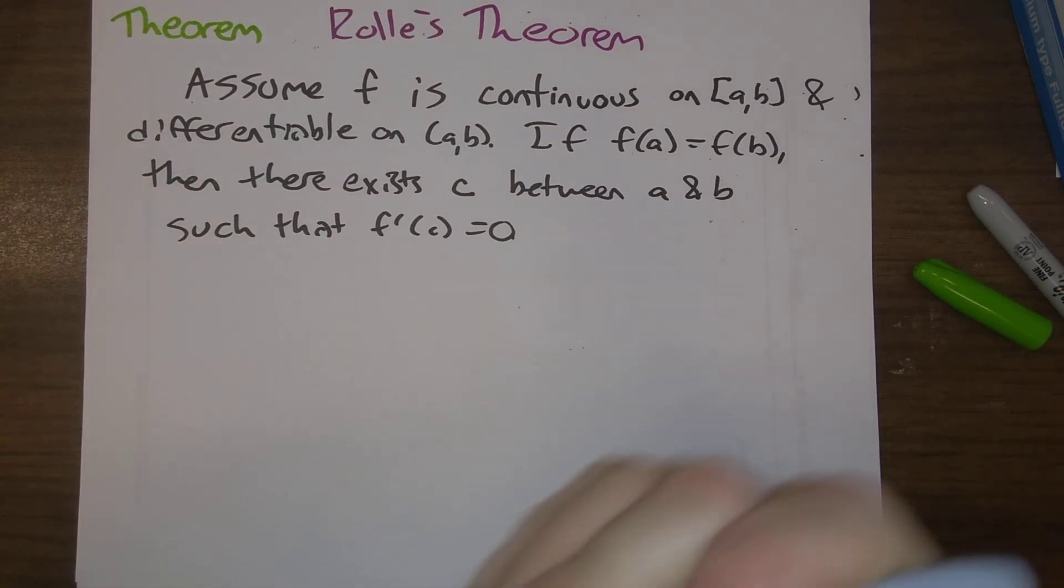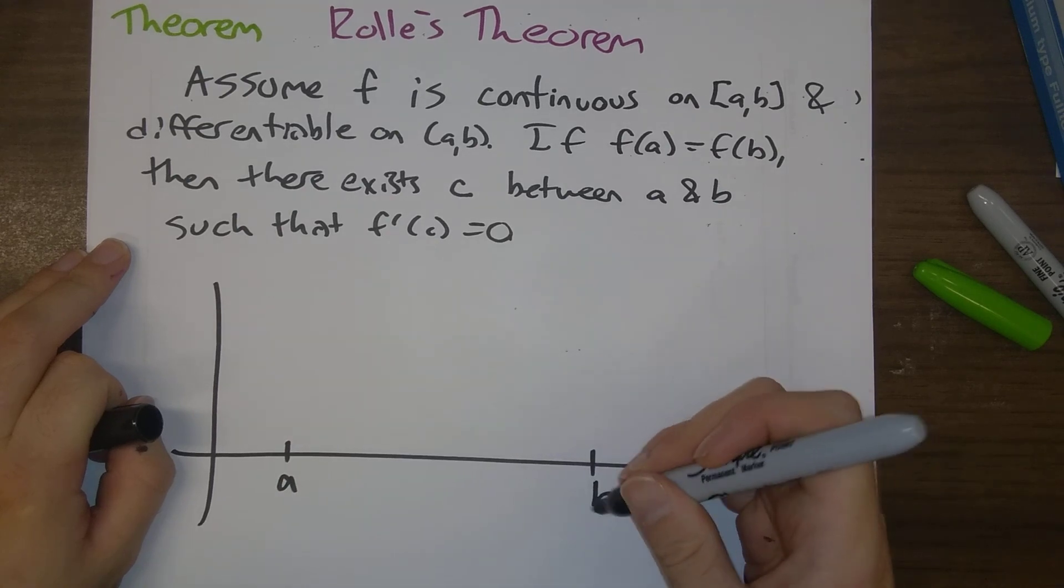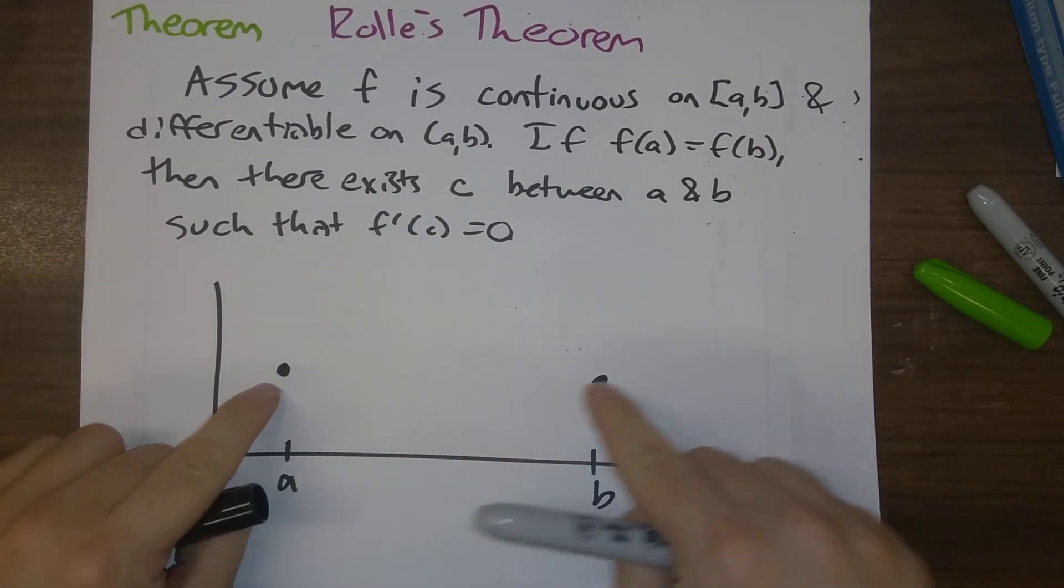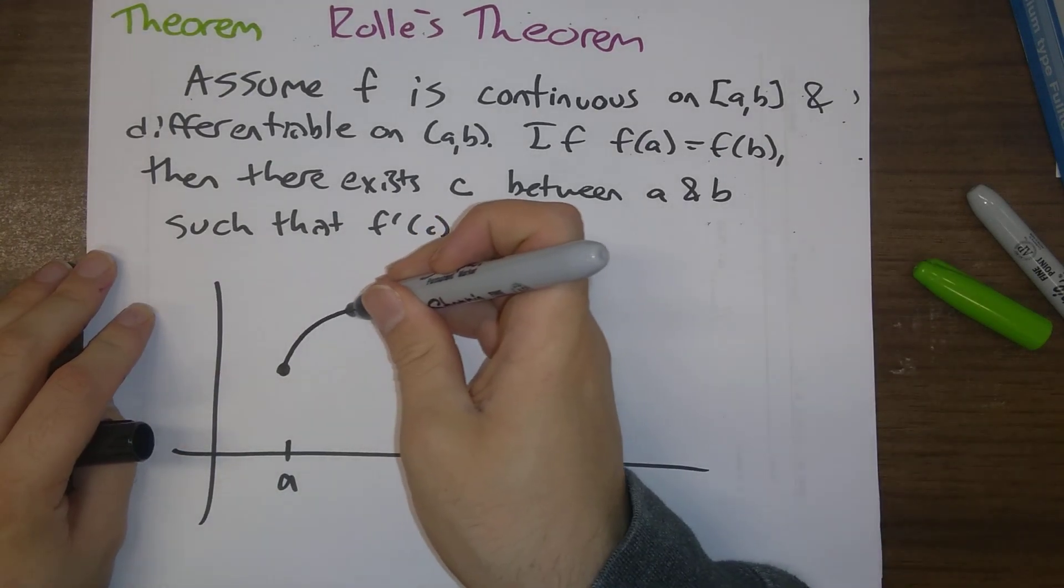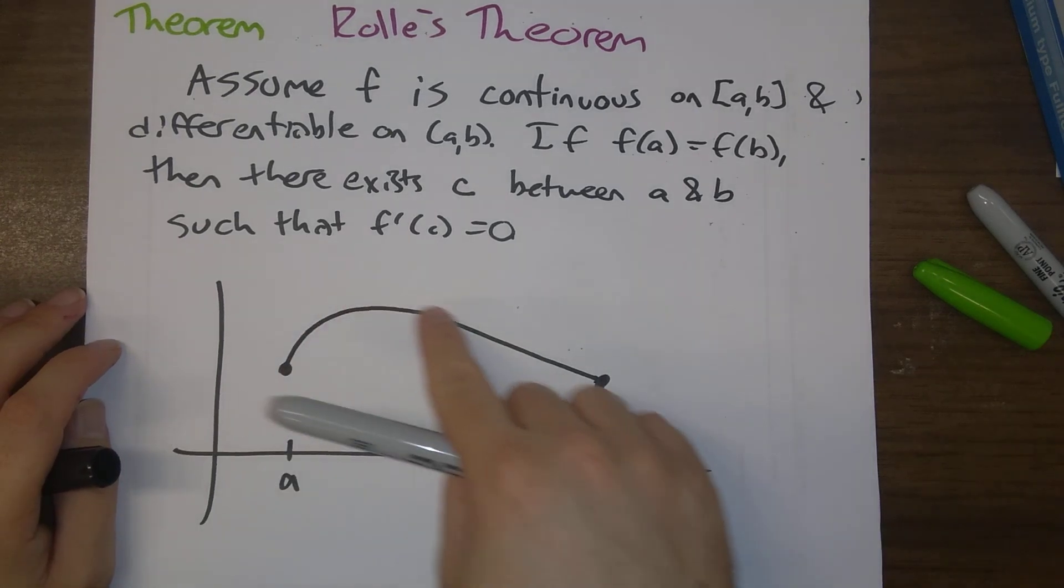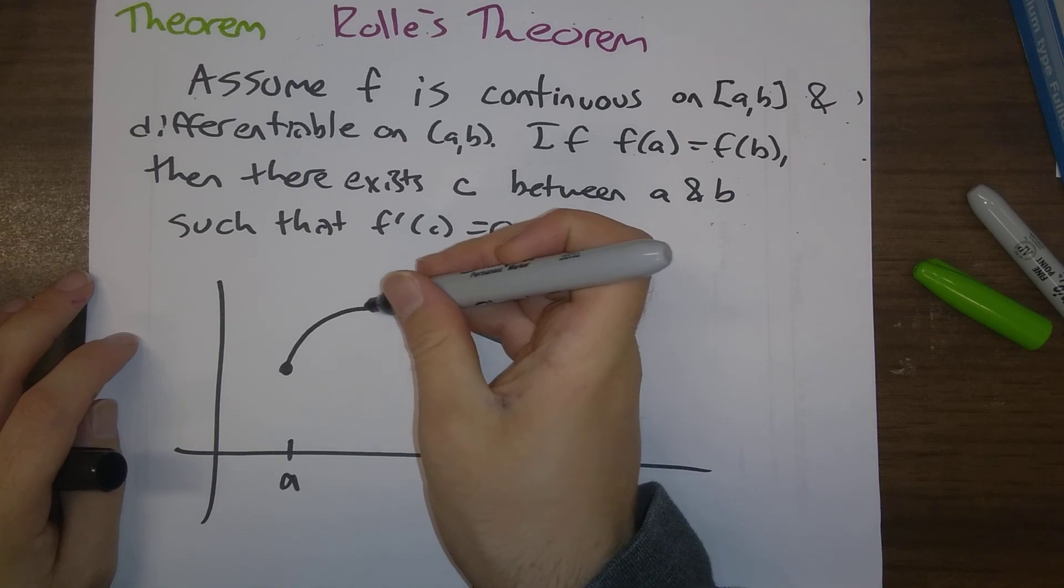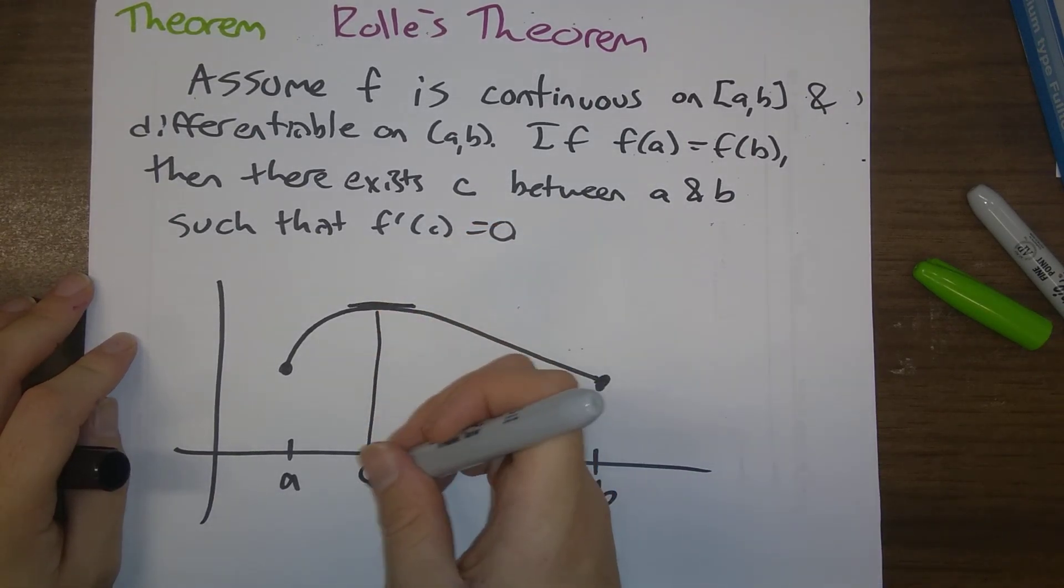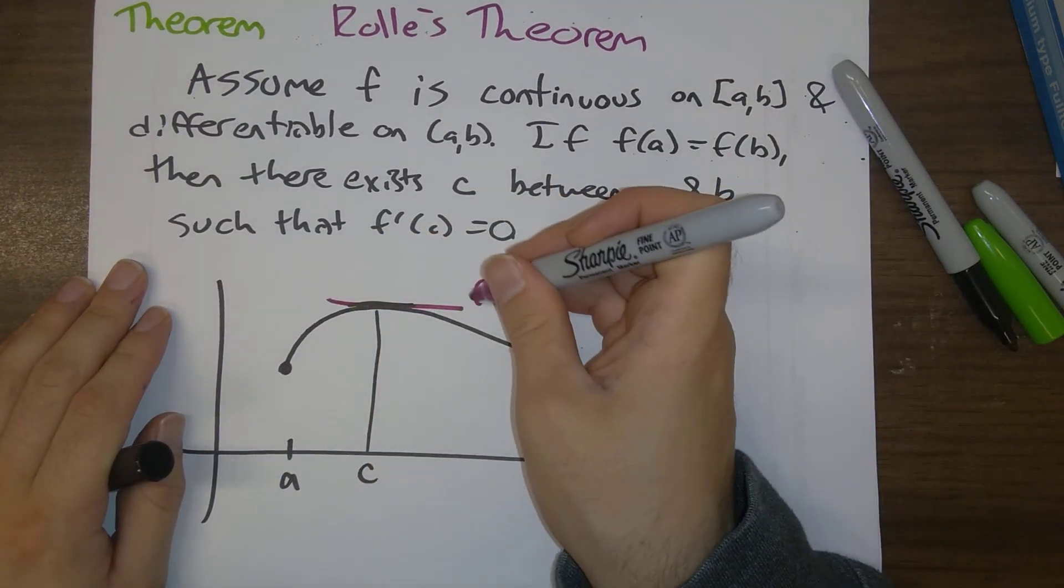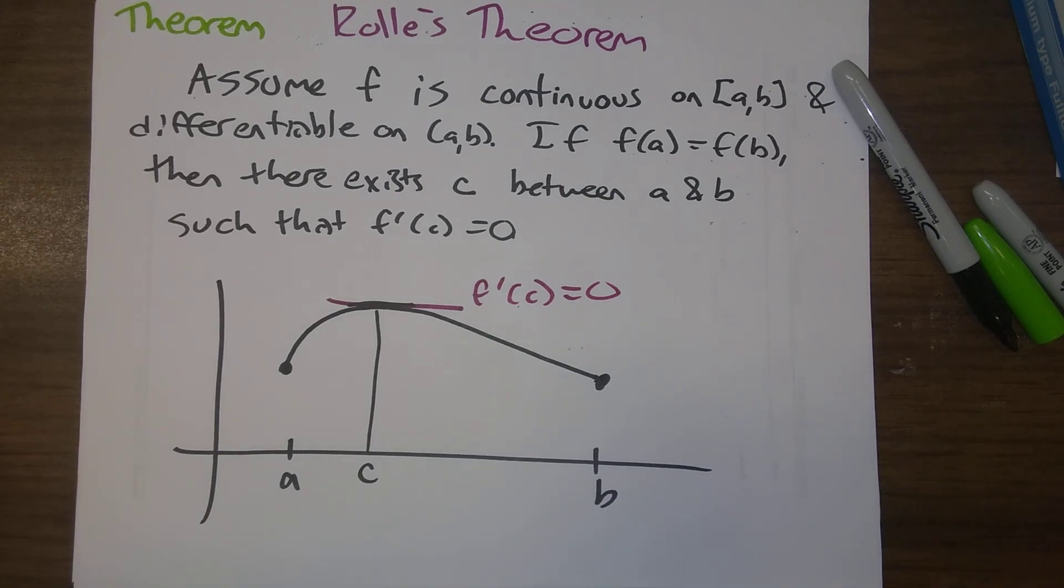So picture a version of that to illustrate what's going on. So here is a, here is b, and suppose that we have f of a is equal to f of b. So if we have a function that's continuous and differentiable in between, at some point we have to have c here so that there is a horizontal tangent line, f prime of c is equal to zero. So that's Rolle's theorem.